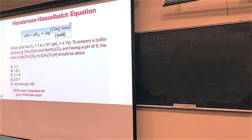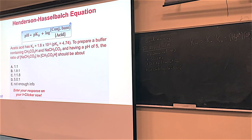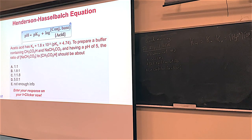We did this problem on Wednesday, but let's do it again. We've got acetic acid with a Ka of 1.8 × 10⁻⁵. pKa equals minus log of 1.8 × 10⁻⁵, which comes out to 4.74. In this question, we're going to have acetic acid and sodium acetate. The Ka comes from the acid — the base would have a KB, but we want the Ka from the acid. We want our buffer to have a pH of 5.